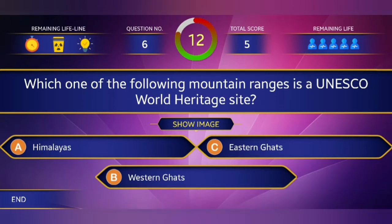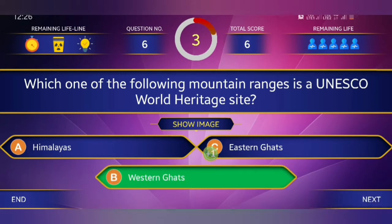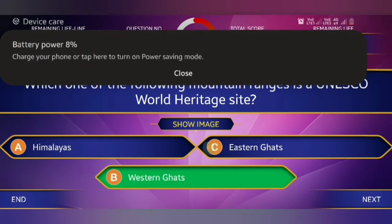Sixth question: Which one of the following mountain ranges is a UNESCO World Heritage Site? The right answer is Western Ghats.